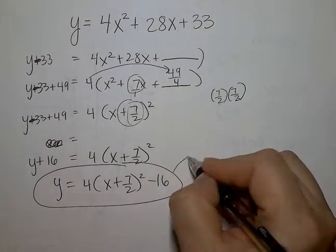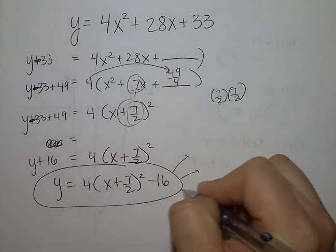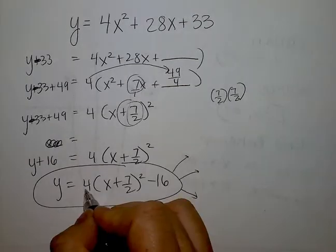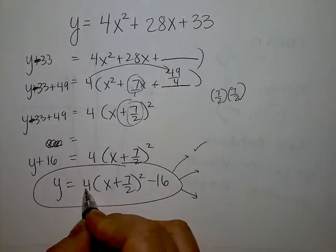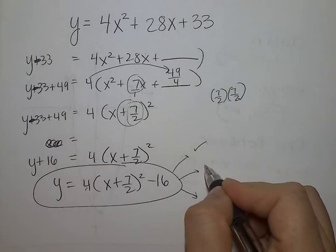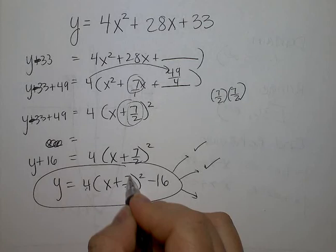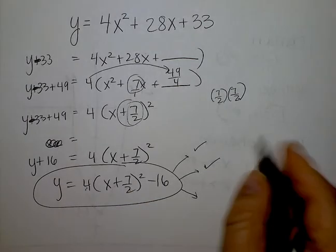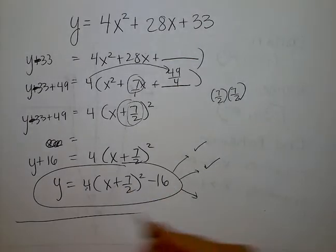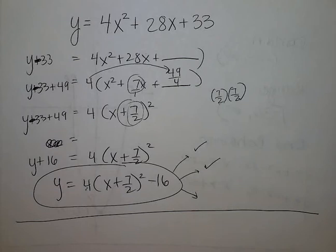Now what does it reveal? Just for time reasons, I'm not going to write them down, but we'll talk about it. It opens up. It stretches by a factor, vertically stretches by a factor of 4. And it has a vertex of negative 7 halves and negative 16. Negative 7 halves, negative 16. How many of you were able to get that? Good.